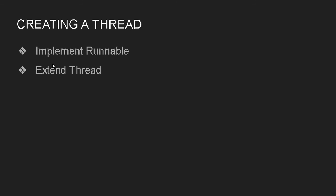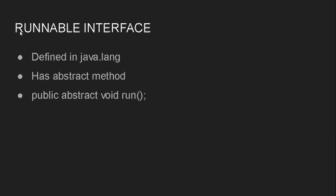There are two ways to create a thread. The first way is to implement the Runnable interface, and the second way is to extend the Thread class. First I will talk about the Runnable interface. The Runnable interface is defined in the java.lang package and it has exactly one abstract method inside it. The name of that method is run(). All methods defined in an interface are public and abstract by default, so the definition of this method is: public void run().